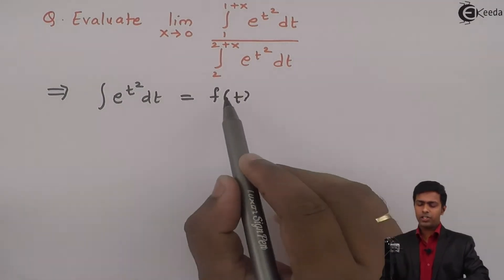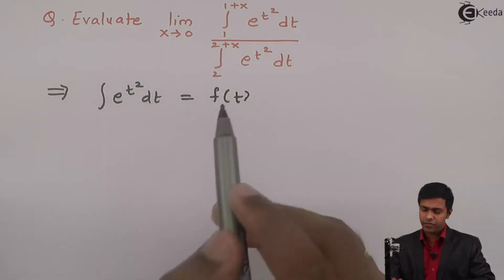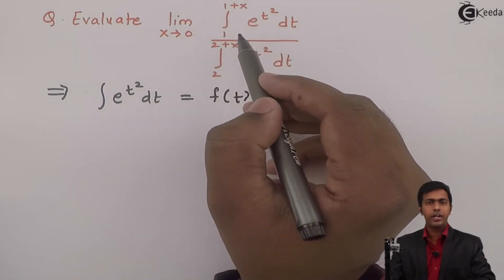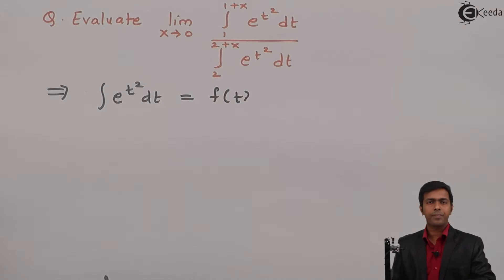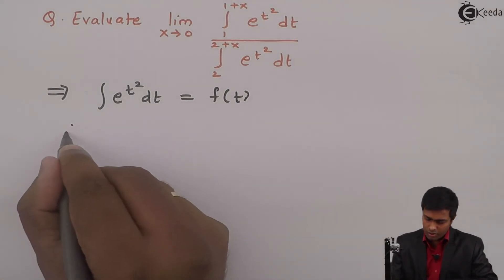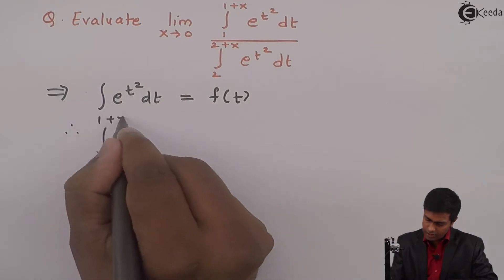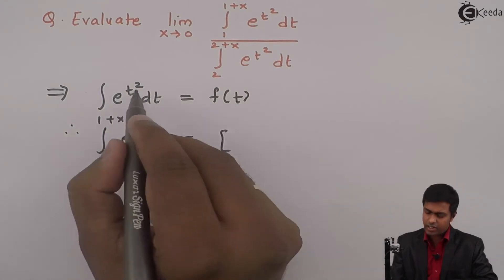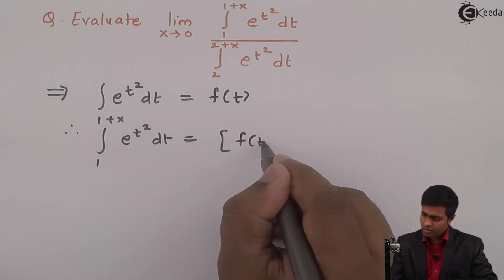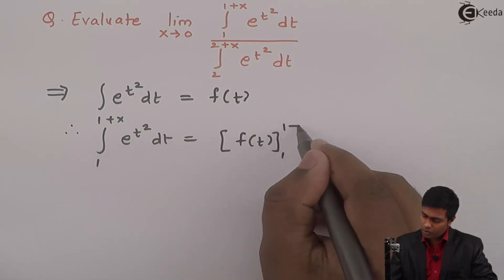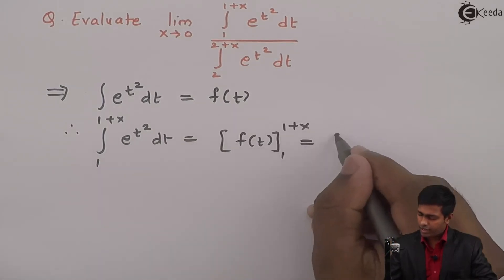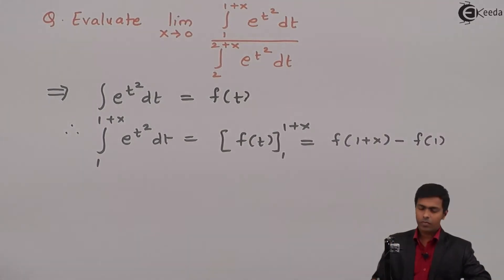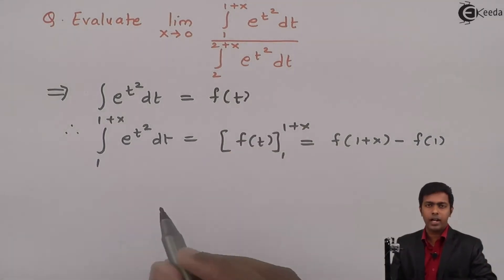Since this is a function of t, we will substitute the upper and lower limits into this function of t. Therefore, the integration from 1 to 1+x of e^(t²) dt becomes f(1+x) − f(1). Similarly, applying the same concept for the denominator, we will get f(2+x) − f(2).